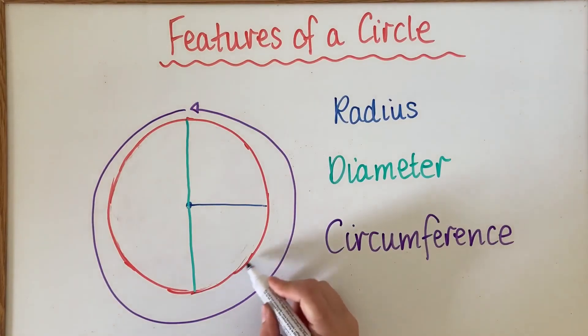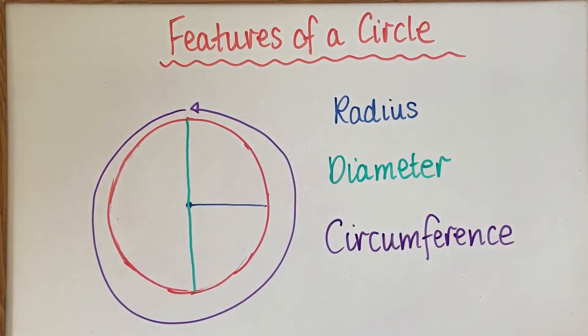It actually hugs to this red line. So this red line here is the measurement of the circumference. It's the distance around the outside of a shape.